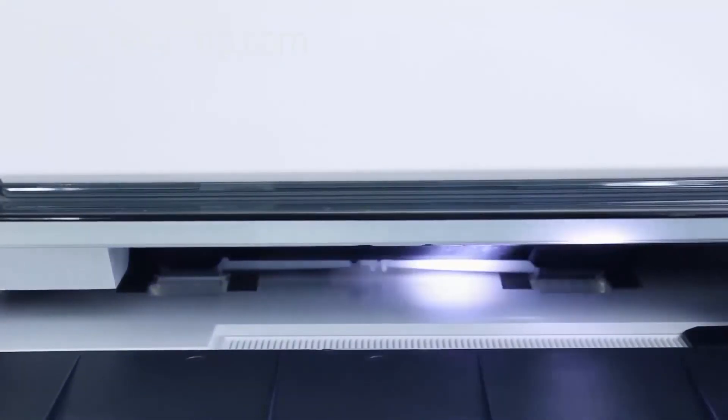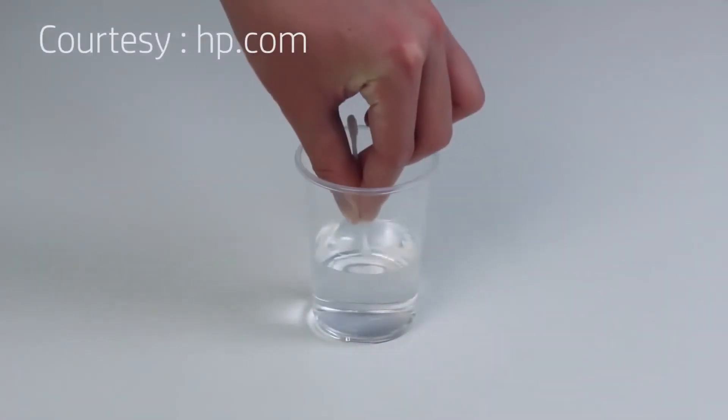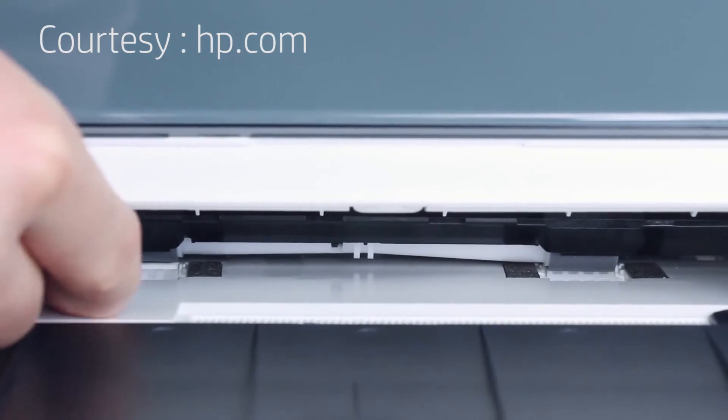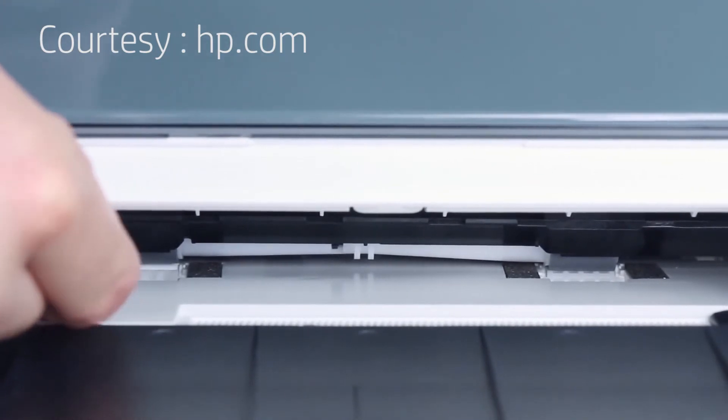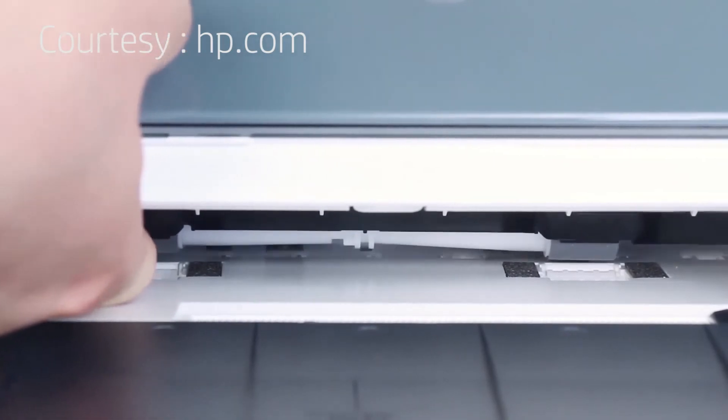Using a flashlight, look into the input tray to find the large paper pick rollers. Dampen the cotton swab with the water, then press it against the rollers while rotating the rollers upward with your fingers. Apply enough pressure to remove dust buildup.